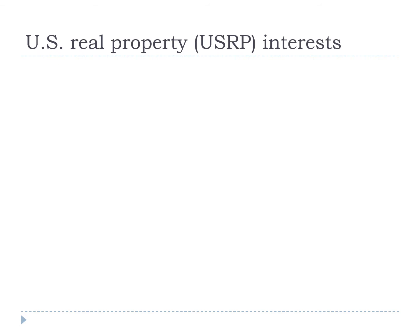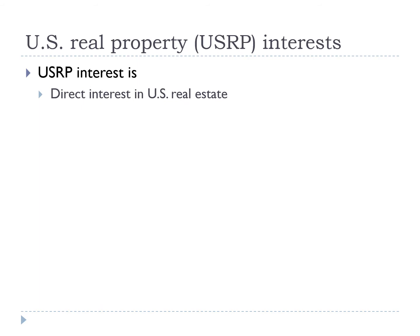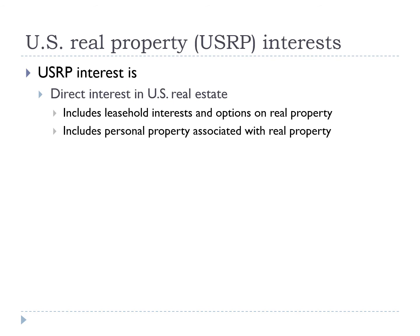Let's start the discussion with the definition of a U.S. real property interest. A U.S. real property interest is defined as a direct interest in U.S. real property, which includes an interest in land and buildings, an interest in a mine, well, or other natural deposit, where that real property is located in the United States or the U.S. Virgin Islands. Such an interest can include leasehold interests and options on real property. It can also include personal property associated with the use of real property. A U.S. real property interest also includes an interest other than as a creditor in the stock of certain domestic corporations that hold U.S. real property.